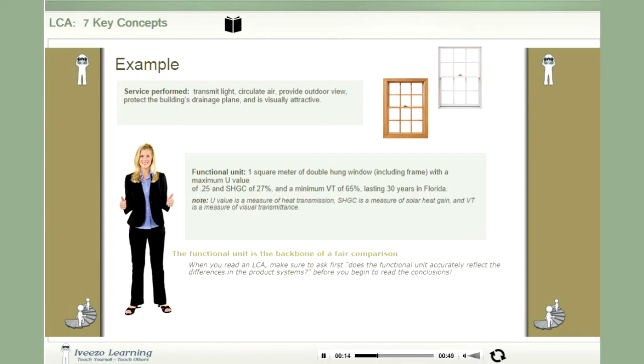With these services now identified, a functional unit can be defined and might be one square meter of double-hung window including frame with a maximum U value of 0.25 and an SHGC of 27%